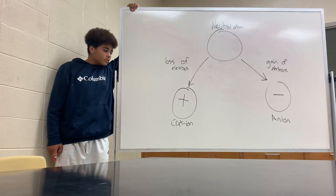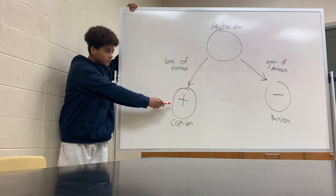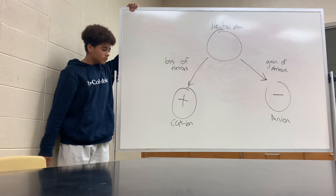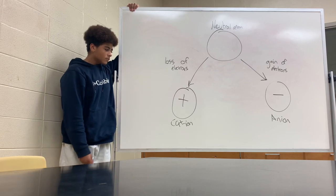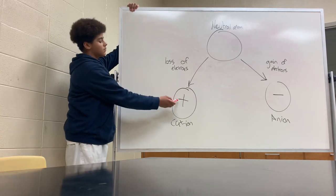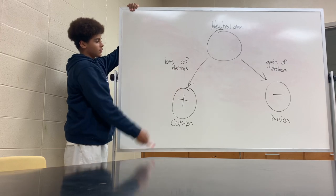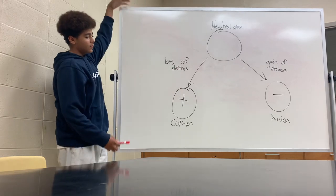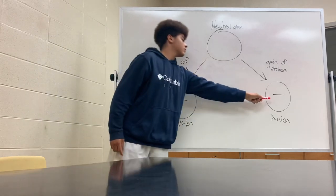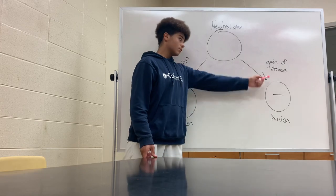Cations versus anions. A cation is a positively charged ion formed when a metal loses its electrons. An anion is a negatively charged ion formed when non-metals gain the electron.